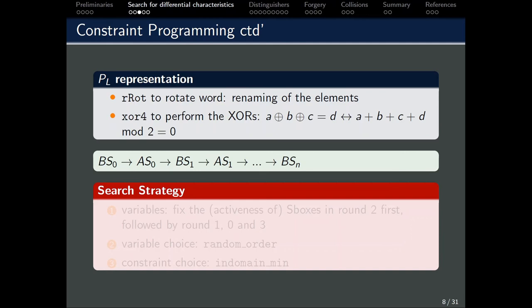To represent the linear layer, which is made up of rotations and XORs, we simply write functions for them. Rotations are just a renaming process. And for XORs, we use a sum with modulo 2 to simulate. Now, the state interacts in the following manner. We start off with Bs0, the initial input difference. Then, we apply the PS layer to the As0. Then, a PL layer will bring it to Bs1, and so on and so forth, until we reach the n-th round input difference.